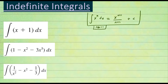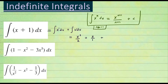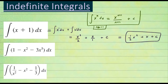For the first problem, we are integrating x plus one. This can be written as the integral of x dx plus the integral of one dx — you can separate it into two separate integrals because of the plus sign. The integral of x has exponent one, so you add one to the power and put the same power on the bottom: x squared over two. For the integral of one, think of x to the zero power; adding one gives x over one, or simply x. So the final answer is one half x squared plus x plus C.